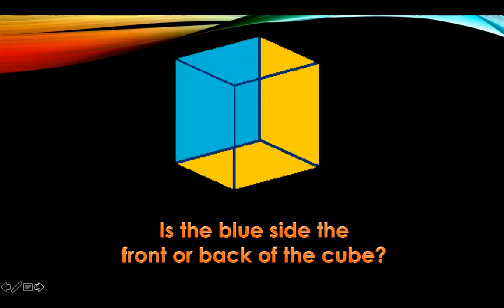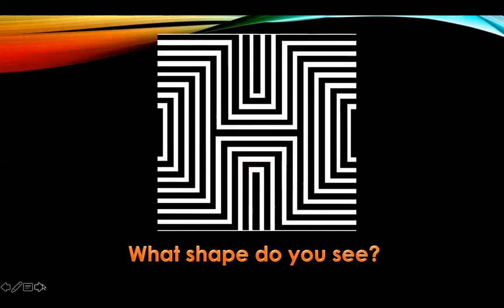Is the blue side of the cube the front or the back? This is actually a trick question. It depends on how you're looking at the cube. If you're looking at it as this rectangle right here is the bottom, then it would be the back of the cube. But it could also be the front — this could be the front, this could be the bottom, and this could be the side. It's all in how you look at it.